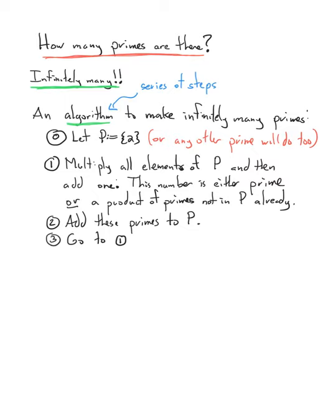So we're going to multiply all elements of P together. But I guess there's only one element in here, so it doesn't make sense yet. But you'll see what's going to happen. So we multiply all elements of P. Well, right now it's just two. And then add one. So two plus one is three. And three, well, that's either a prime number, or it's a product of primes not in P already.